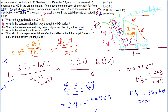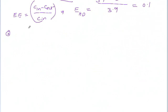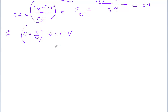The last question, part e, asks: what should the replacement dose after hemodialysis be if the target C_max is 10 mg/L and the patient weighs 70 kg? The basic equation is concentration equals dose divided by volume, so dose equals concentration times volume. We want to find the replacement dose to achieve a target C_max of 10 mg/L.